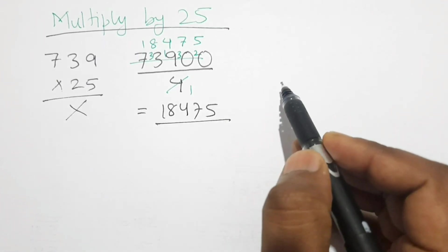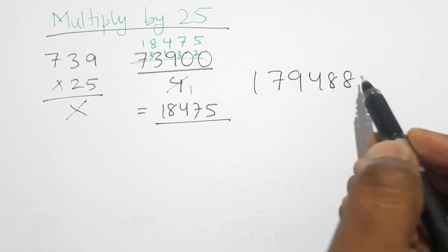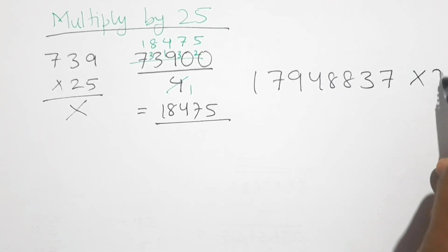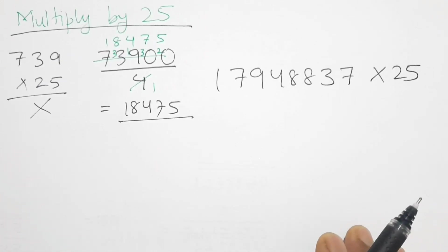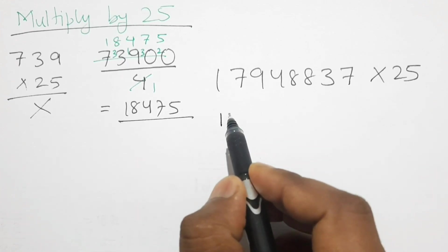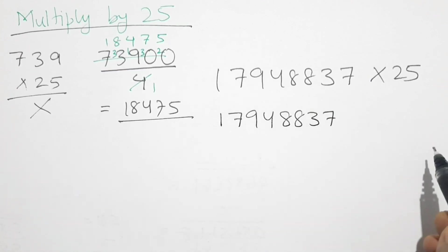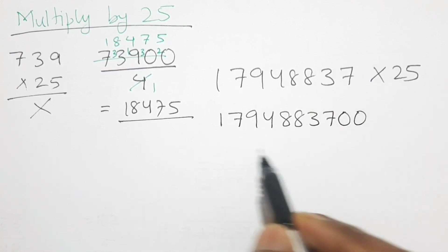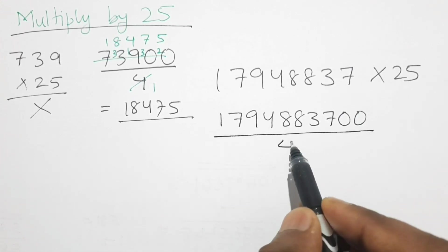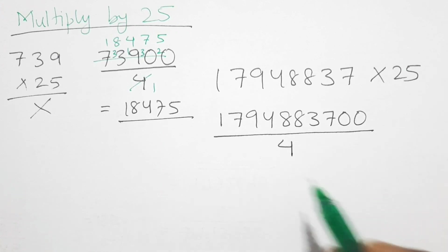Let's take a much bigger number: 717948837. We multiply this by 25 using the shortcut. First we multiply by 100 — put two zeros behind to get 71794883700. Next we divide this product by 4, because 25 is one-fourth of 100.